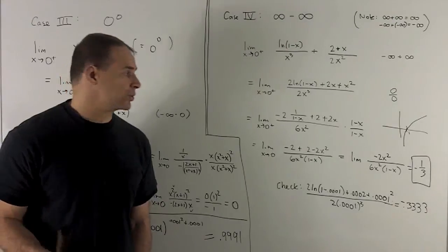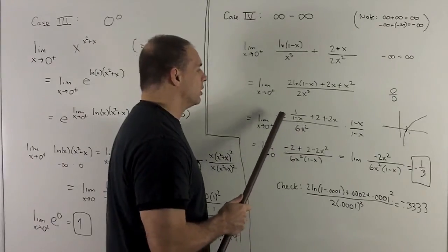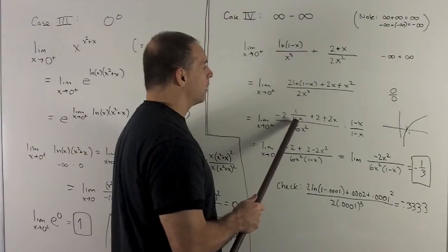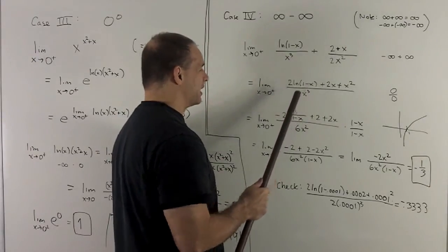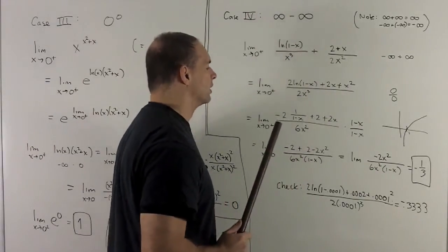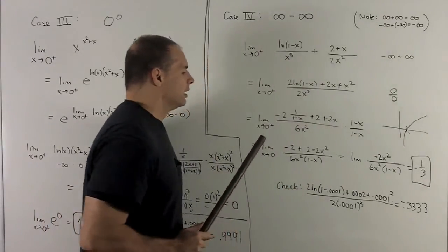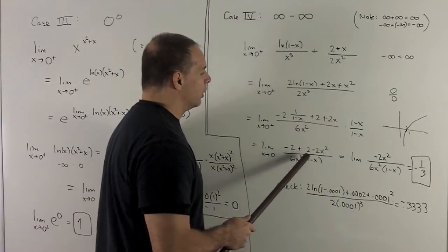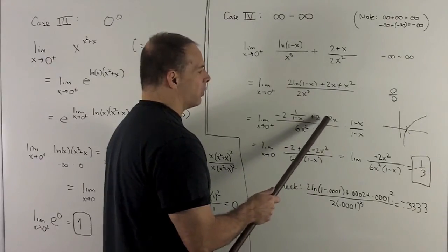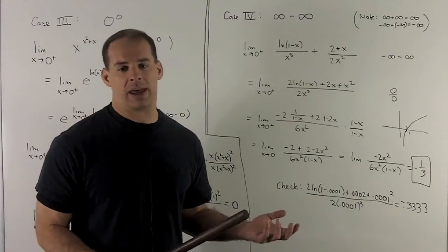Taking the derivative of the top and bottom: derivative of the bottom is 6x². For the top, derivative of ln gives 1/(1 minus x) times minus 1 from the chain rule, plus 2 plus 2x. To clean up, multiply top and bottom by (1 minus x) to eliminate the fraction. The top simplifies: minus 2 plus 2(1 minus x) minus 2x²(1 minus x), which factors nicely.